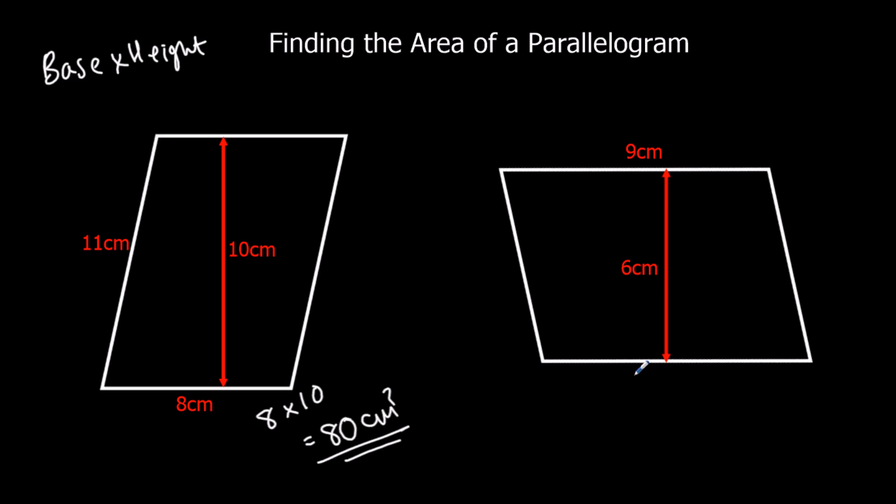Here the base is 9, because it's the same as the one at the top. The parallel lengths are the same. So 9 times the height, which is 6, and 9 times 6 is 54 centimeters squared.